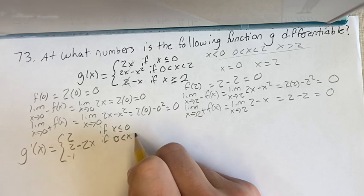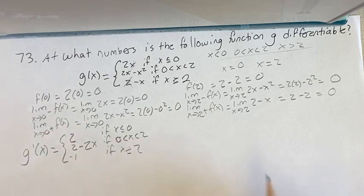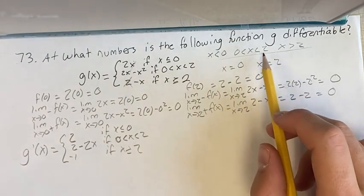If x is less than 0, 0 is less than x is less than 2, and then if x is greater than or equal to 2. So again, we know when x is less than 0, this range, this range.